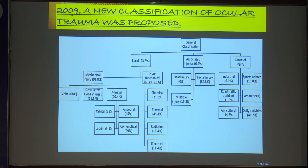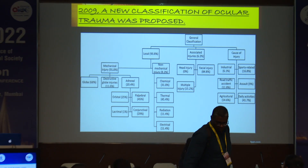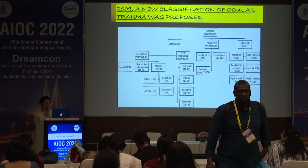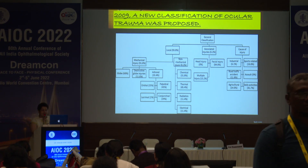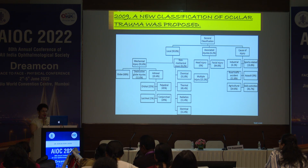The adnexa involves the palpebral fissures, conjunctiva, lacrimal apparatus, and orbit. Under associated injuries, the classification includes injuries of the head, facial injuries, and multiple injuries. The cause category captures whether the injury was sports-related, due to a road traffic accident, industrial, assault, agricultural, or from daily activities.